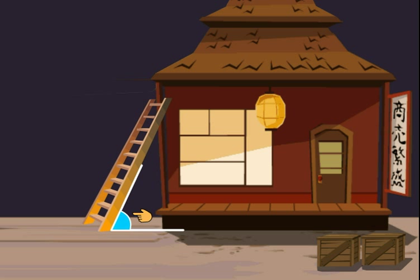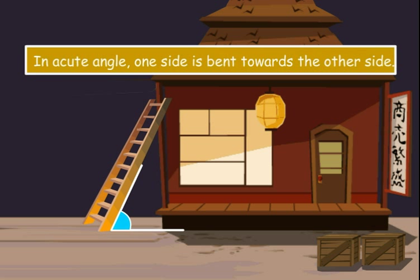Now, is this a right angle? No, it is not. In this angle, one side is bent towards the other side. Such an angle is known as an acute angle. You want some examples?